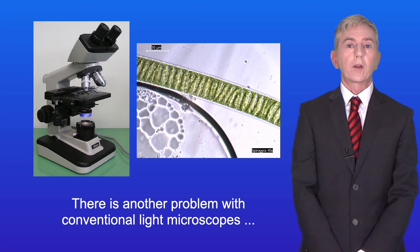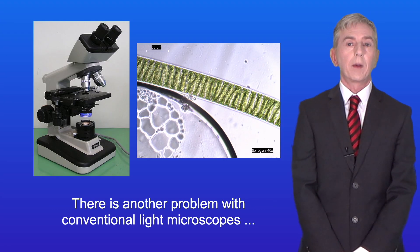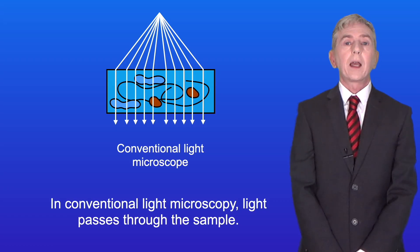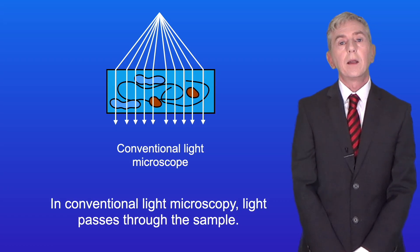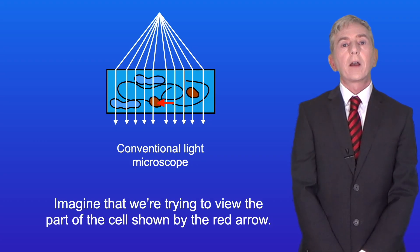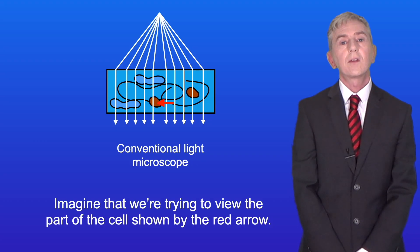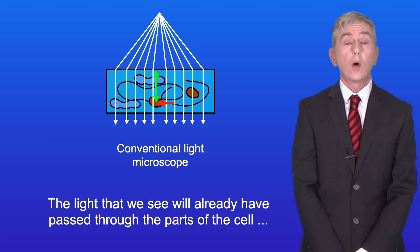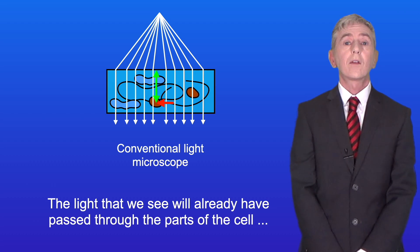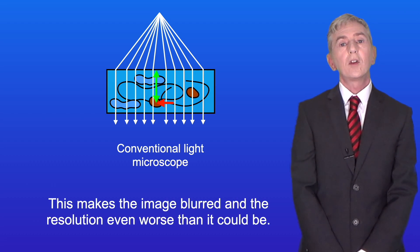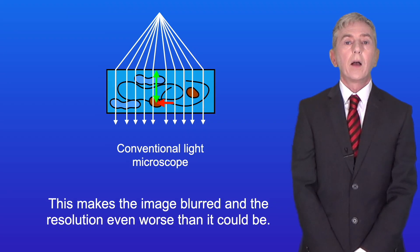There is another problem with conventional light microscopes which leads to poor resolution. In conventional light microscopy, light passes through the sample. Imagine that we're trying to view the part of the cell shown by the red arrow. The light that we see will already have passed through the parts of the cell shown by the green arrow. This makes the image blurred and the resolution even worse than it could be.